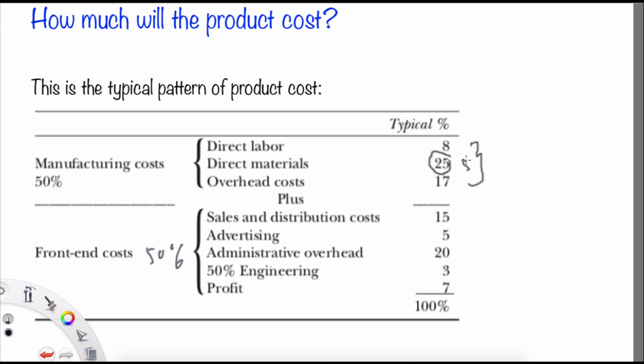And the other one is the front end activity, such as the sales and distribution, advertising, administrative overhead, 50% engineering, and the profit, which will be 100%.